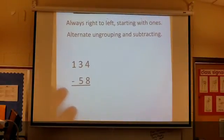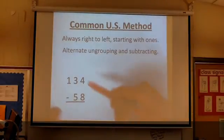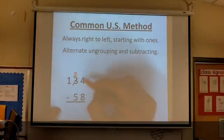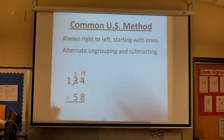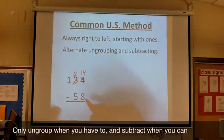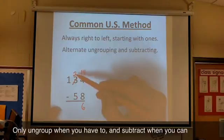The last method is the one that we're probably most familiar with. The difference here, this is the way we learned in school, the difference here is you always have to go right to left starting with the ones. And you're going to alternate ungrouping and subtracting. So, 4 ones minus 8 ones, can't do it. Just the same as what we did before. I'm going to get 10 more ones from the tens. But now, instead of keep going with my ungrouping, I'm going to do my subtraction. So 14 minus 8. As soon as you can do subtracting, you do it.